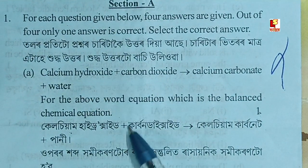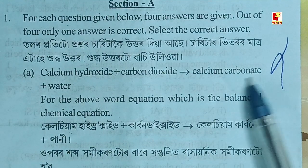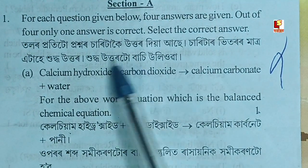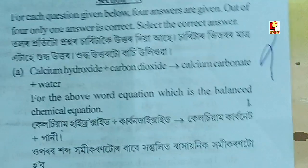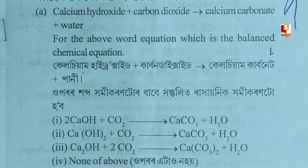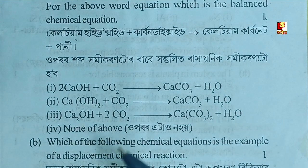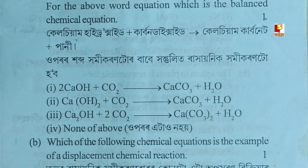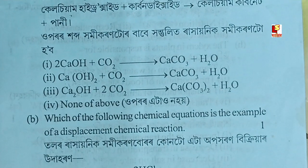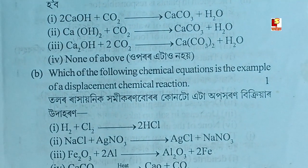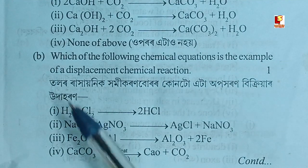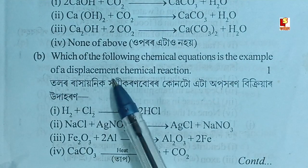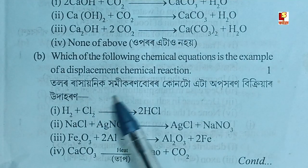Hydrogen hydroxide plus carbon dioxide gives calcium carbonate and carbon. This is the same thing that we have to write. Which of the following chemical equations is an example of a displacement chemical reaction?